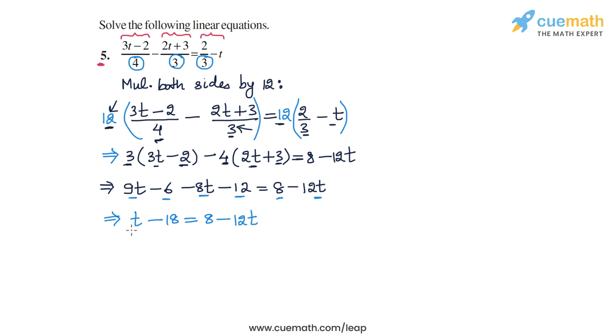Now let's combine the variable terms t and minus 12t. For this purpose, let's take this minus 12t term and transpose it to the left-hand side. So we will get t minus 18, and the transposed term will be plus 12t, and then on the right-hand side, we will have just 8.